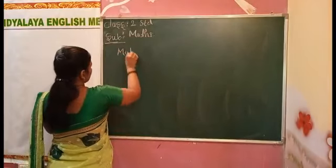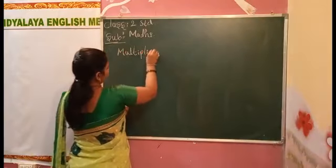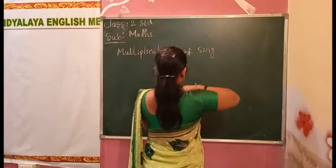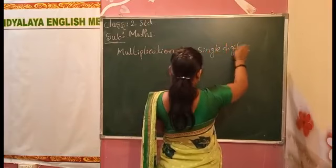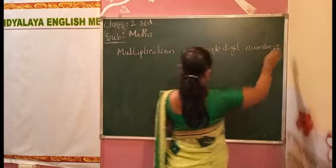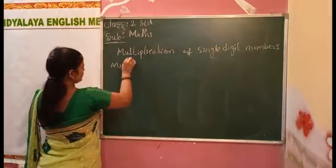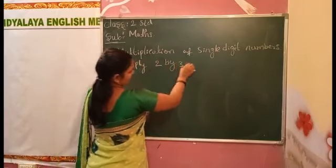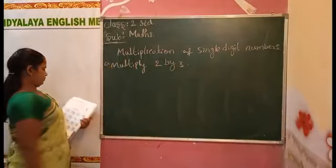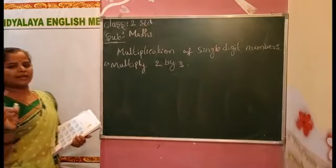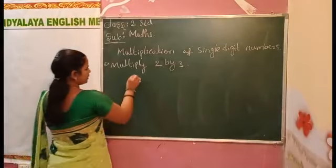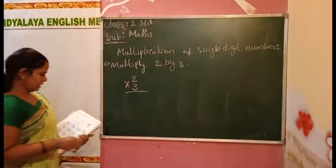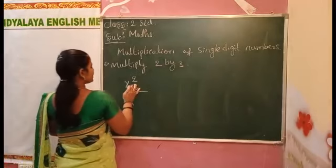Today's concept is multiplication of single digit numbers. For example, multiply 2 by 3. Here, 2 is how many times? 3 times. So, 2 into 3. 3 twos are how much? 2 threes are 6.